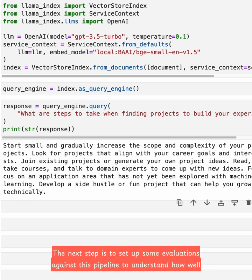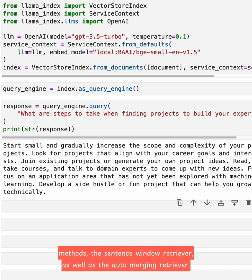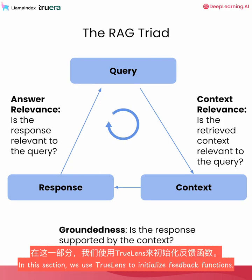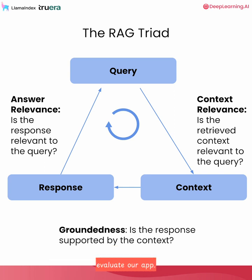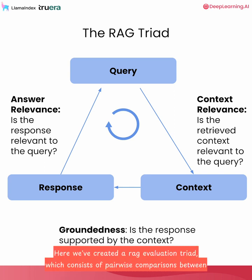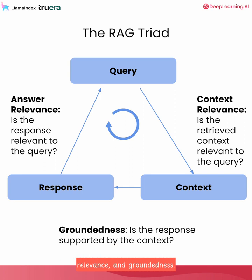The next step is to set up some evaluations against this pipeline to understand how well it performs, and this will also provide the basis for defining our advanced retrieval methods — the sentence window retriever as well as the auto-merging retriever. In this section, we use TrueLens to initialize feedback functions. We've created a RAG evaluation triad, which consists of pairwise comparisons between the query, response, and context, creating three different evaluation modules: answer relevance, context relevance, and groundedness.